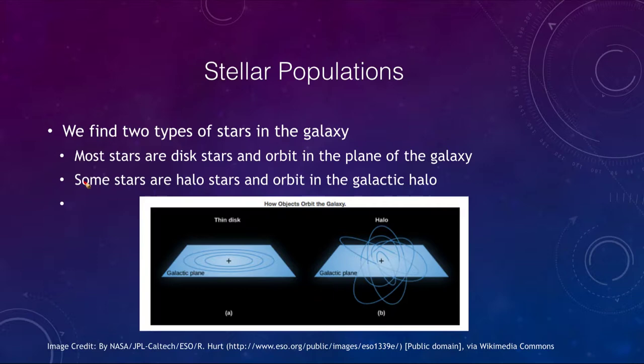What we find with stellar populations is that there are essentially two types of stars in the galaxy. Most stars that we see are what we call disk stars, meaning that they are in the disk of the galaxy and they orbit in roughly circular orbits that go around the center of our galaxy in a flat plane, much as the planets orbit around the Sun in essentially a flat plane.